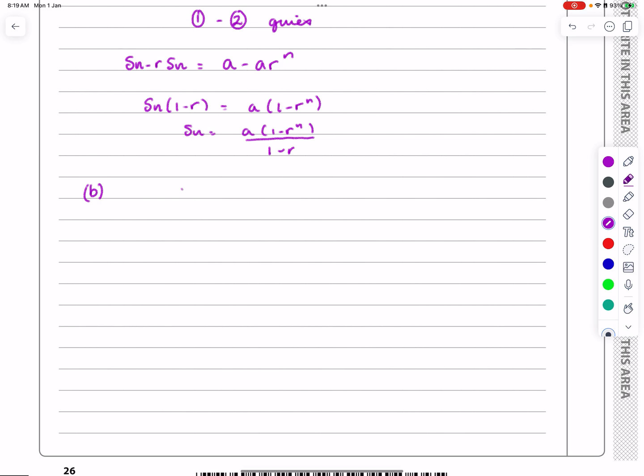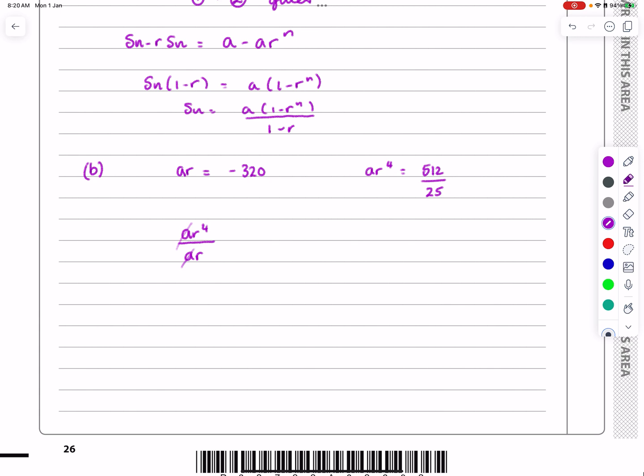When we're looking at these, just put the information down. The second term is ar, so that's equal to minus 320, and the fifth term, which gives me ar to the 4, is equal to 512 divided by 25. If you've done practice of these, we know that the way to tidy up any simultaneous equations when we've got geometric is to look at dividing them. If I do ar to the 4 divided by ar, that's the way I'm going to cancel out the a's and just get r cubed. So that is 512 over 25 divided by minus 320.